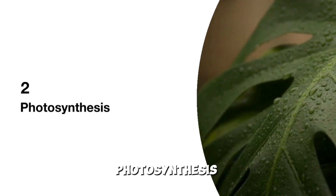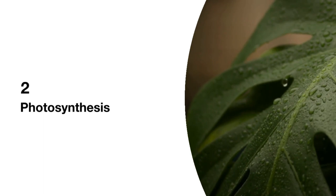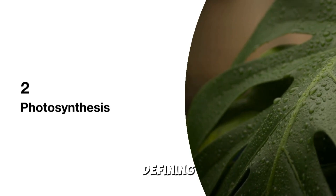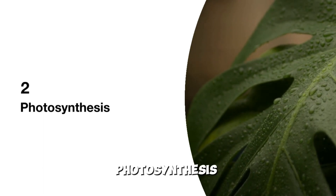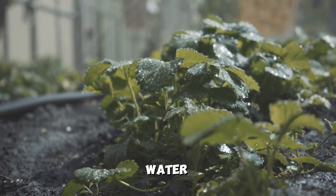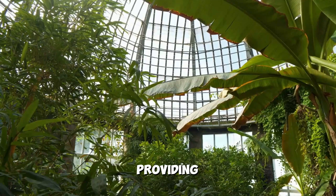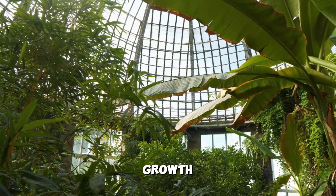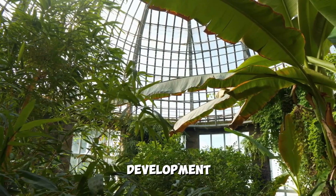2. Photosynthesis: One of the most defining features of plants is their ability to carry out photosynthesis. They use sunlight to convert carbon dioxide and water into glucose, providing energy for growth and development.